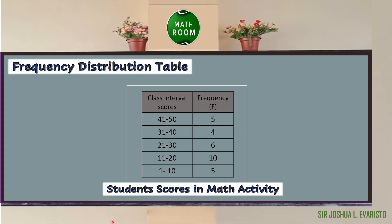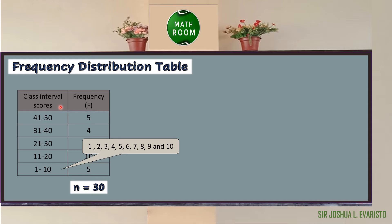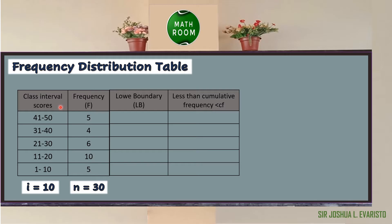There are 6 students who got 21 to 30, 4 students from 31 to 40, and 5 students who got a score from 41 to 50. To identify the total number of students, you will add all the frequencies, and that will represent our n. We have 5 + 4 = 9, + 6 = 15, + 10 = 25, + 5 = 30, so n is equal to 30. The size of the class interval i is equal to 10, because we have 10 scores in each class.